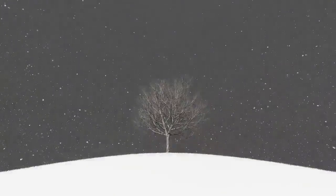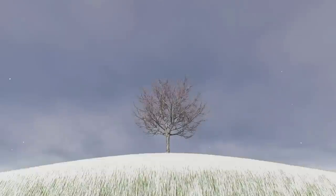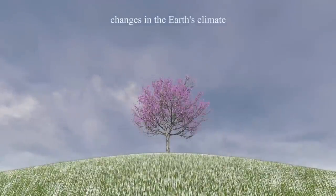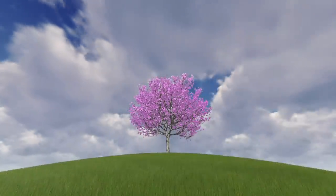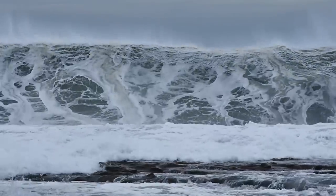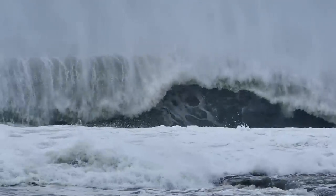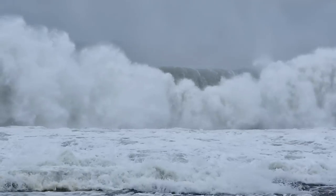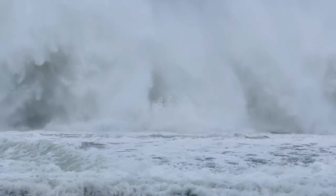However, there are also some negative consequences of the Earth's slowing rotation. One of these is that it can lead to changes in the Earth's climate, as the distribution of heat and moisture across the planet is affected by the length of a day. In addition, the slowing down of the Earth's rotation can also cause changes in the tides and other oceanic phenomena, which can have an impact on marine life and coastal ecosystems.